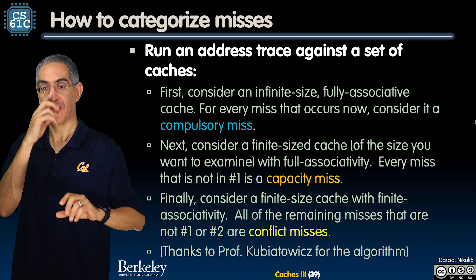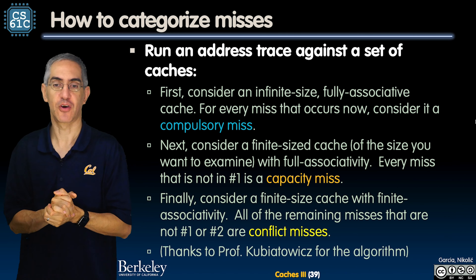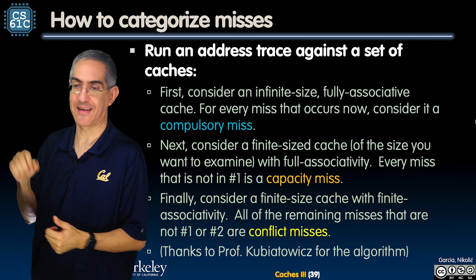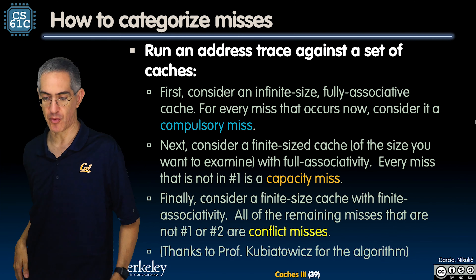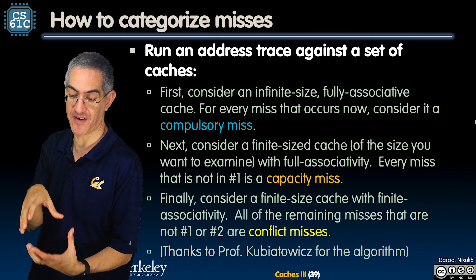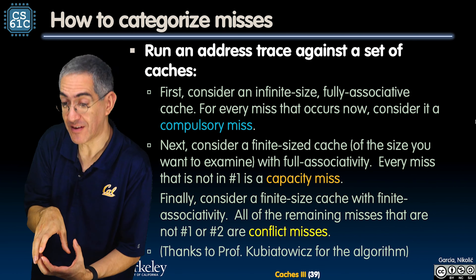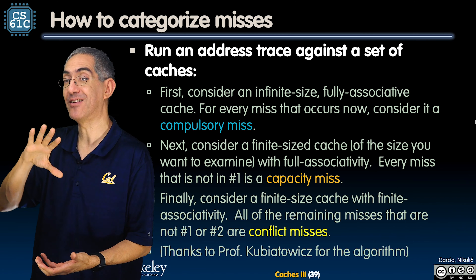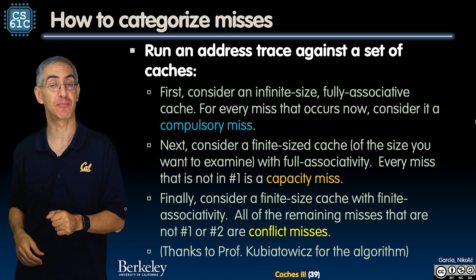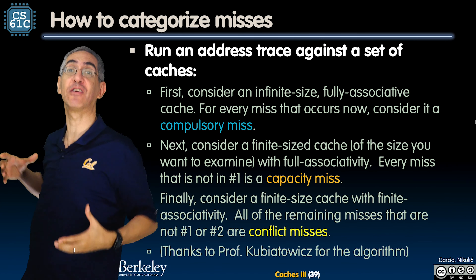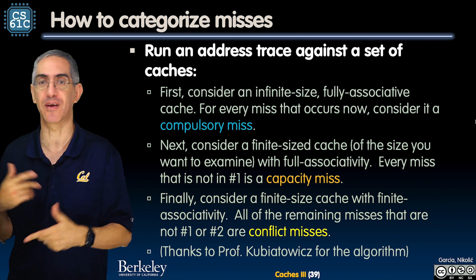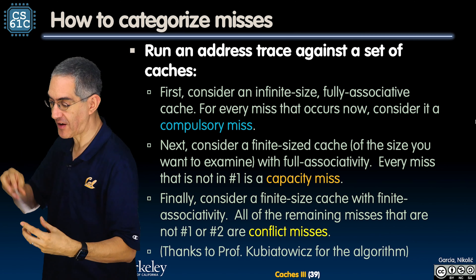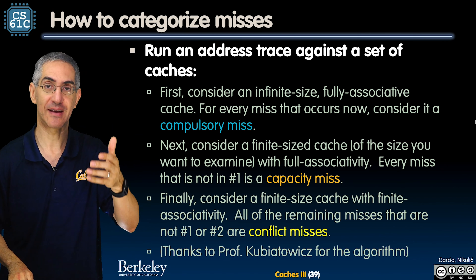With finite associativity, all the remaining misses are conflict misses — misses I wouldn't have had if it were fully associative. That's the idea. So that's a really nice algorithm for categorizing misses: is it a compulsory miss, a capacity miss, or a conflict miss? Run this set of address traces to see what would happen, and those three cases will be flagged.